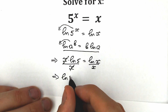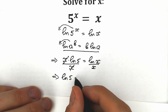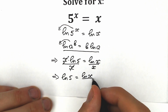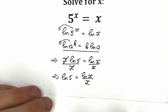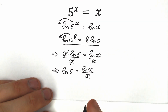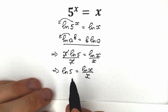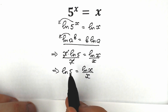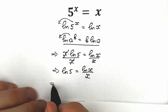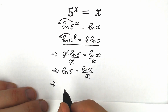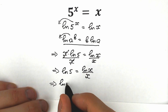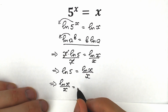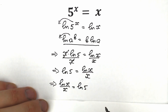We have natural log 5 on the left side equal to natural log x over x. For better understanding, let's swap sides, since everyone prefers variables on the left. So we have: natural log x over x equal to natural log 5.